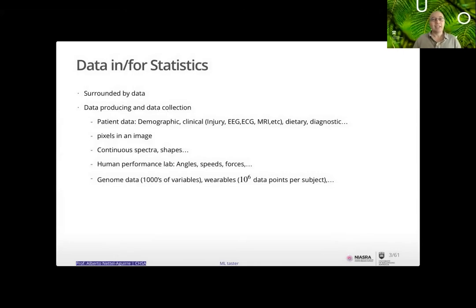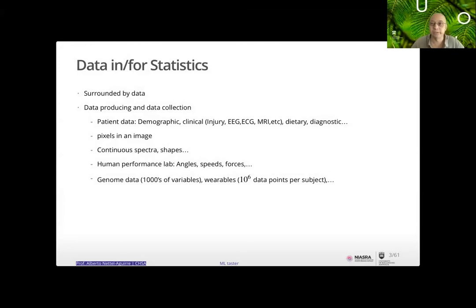When we think of data in statistics, we're really surrounded by data and producing more and more of it — patient data with demographics, clinical records, EEGs, ECGs, MRIs, pixels in diagnostic images, spectra or cell shapes in biology, and continuous measurement of angles, speeds, and forces on people moving.